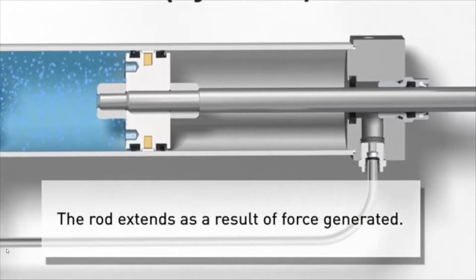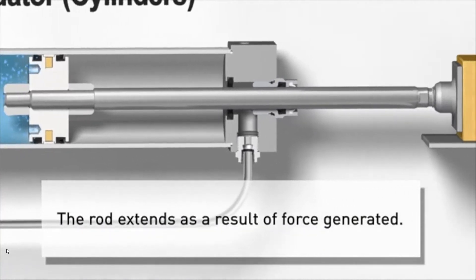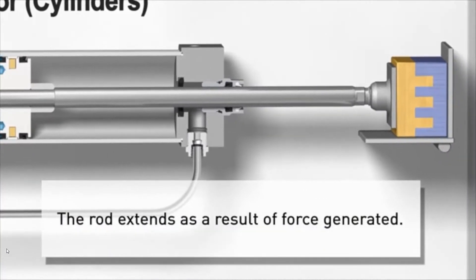The actuator will continue to move in that direction until it reaches its physical limit, or if the force resisting motion, commonly called the load, is higher than the force of the compressed air, in which case the pressure regulator could be adjusted to a higher pressure.